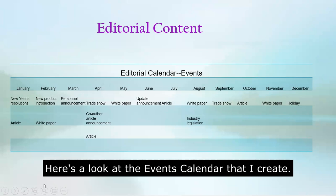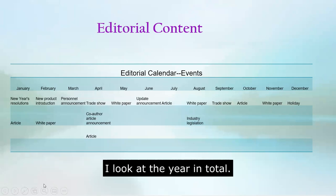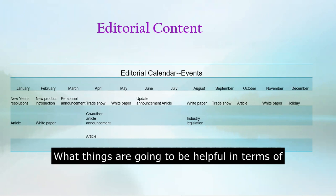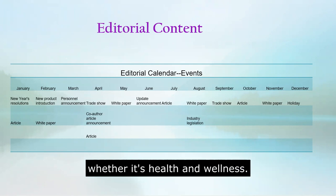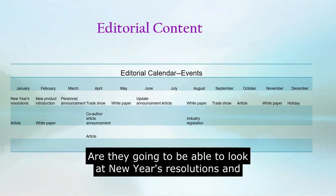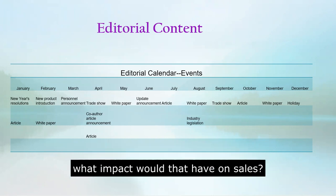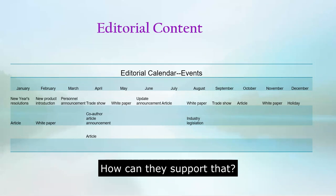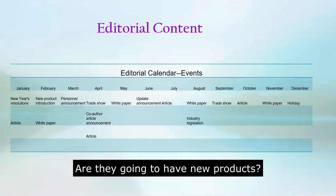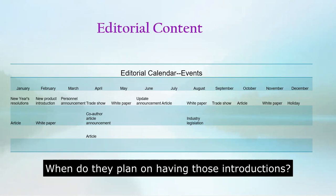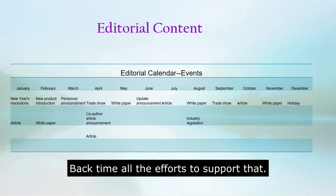Here's a look at the events calendar that I create. I look at the year in total — what things are going to be helpful in terms of the industry of my client. Whether it's health and wellness, are they going to be able to look at New Year's resolutions and what impact that would have on the sales of their products and how can they support that? And are they going to have new products? When do they plan on having those introductions so that you can back-time all the efforts to support that?